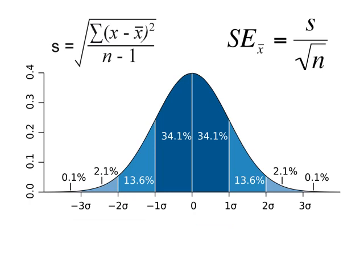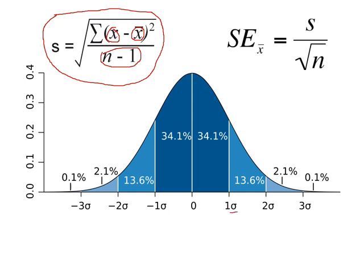A lot of what we consider in sampling is: does our sample mean match the true population mean? If you were to take every needle off every tree and measure them, there would be a true mean. We want to know if our sample represents that mean. If your data are normally distributed with this bell-shaped curve, we can calculate the standard deviation — the sample standard deviation — which is roughly the average distance between any data point and the sample mean. You take each value minus the mean, square those, divide by sample size minus one, and take the square root.